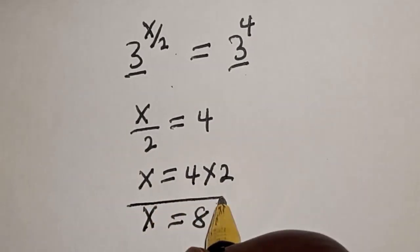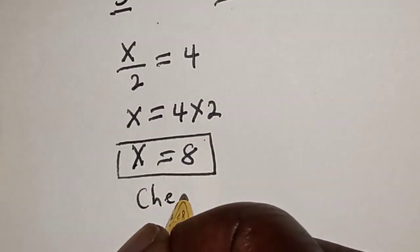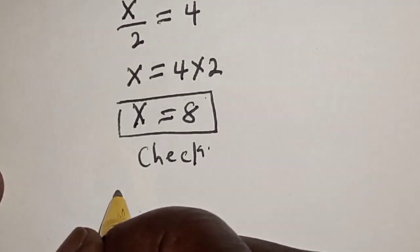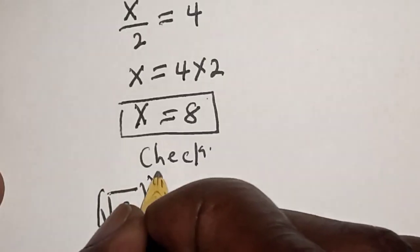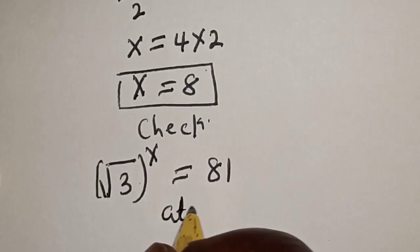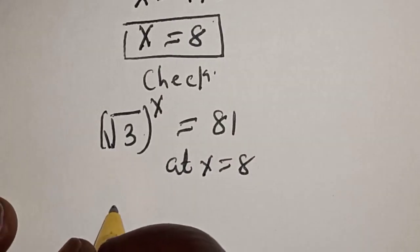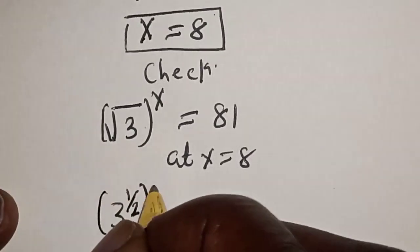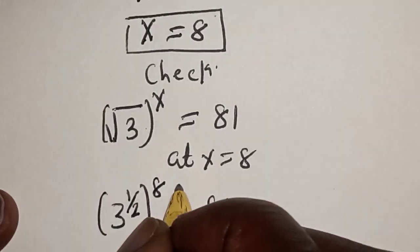We can check to confirm if our answer is right or wrong. We have the given equation: root of 3 raised to power s must equal 81. At s equals 8, we have 3 raised to power 1 over 2, raised to power 8, equal to 81.